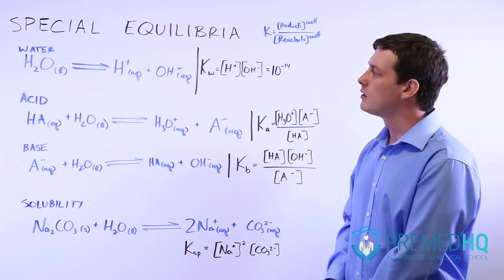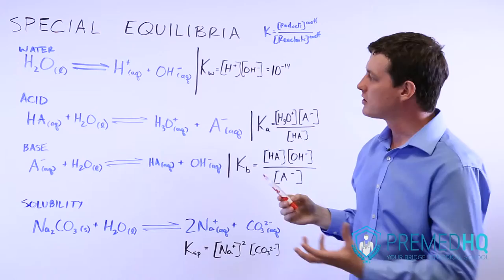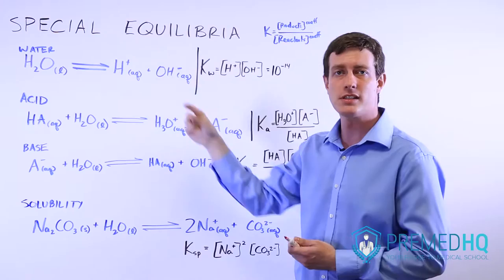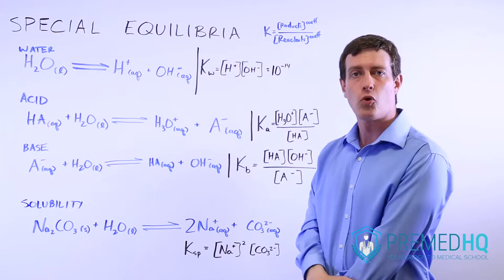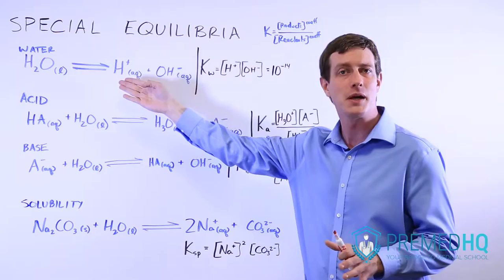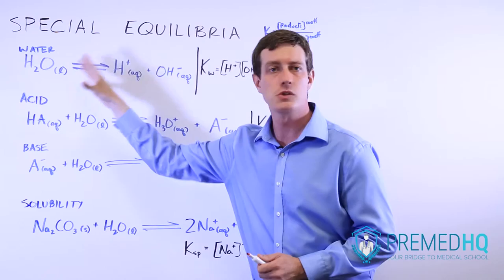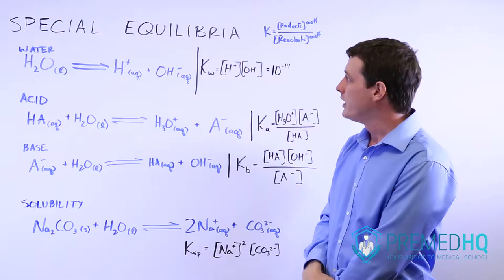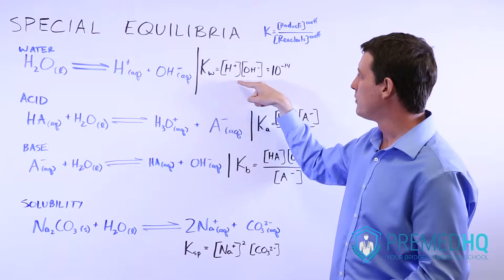We'll start off with water. What happens with liquid water is that every now and then it will dissociate into H+ and OH minus. You may also see this H+ as H3O+. That's another way it could be depicted, and that's the actual form that the ion is in — it's usually H3O+ in aqueous solution. You're unlikely to find an actual H+ by itself, but we can depict it this way. Because this is liquid water, we don't use pure liquids in our equilibrium expressions.